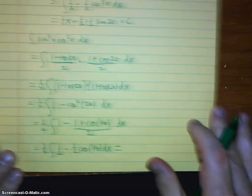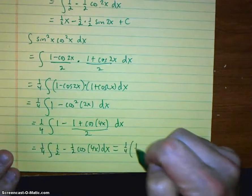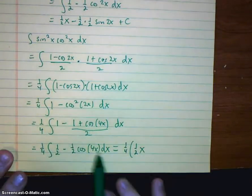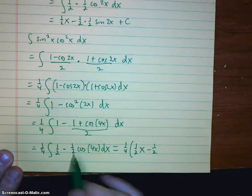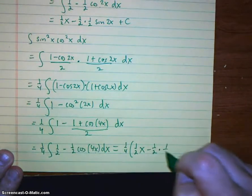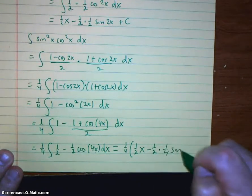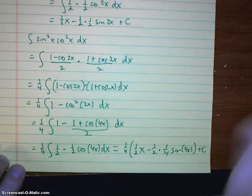So final answer is, we've got this 1 quarter. Then we have a 1 half x. And when we integrate this, because of this 4, we'll still have that 1 half. But because of this 4, we'll have a 1 fourth. Sine 4x. Plus C.